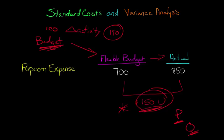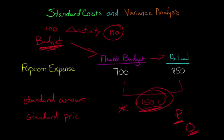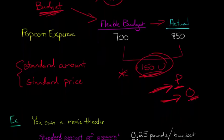We didn't really get into that with flexible budgeting. This is where the notion of standard costing and variance analysis comes in. Now we can say there's a standard amount of popcorn acceptable to put into each bucket, and a standard price we think is good for popcorn. We take these standards, compare them to the actual amounts, and parse out whether this variance is due to spending too much on popcorn, using too much popcorn, or a combination of the two.